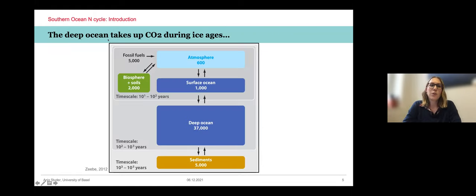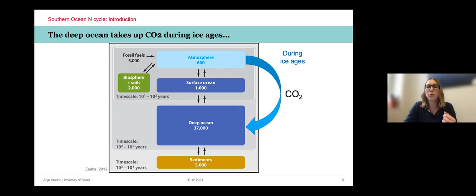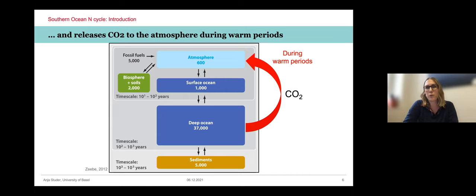These are the different carbon reservoirs that exchange with the atmosphere. The deep ocean is about 50 times larger than the atmosphere and it exchanges on timescales of hundreds to thousands of years, relatively fast. It is widely accepted that during ice ages, the deep ocean takes up CO2, and during warm periods, the deep ocean releases CO2 back into the atmosphere.